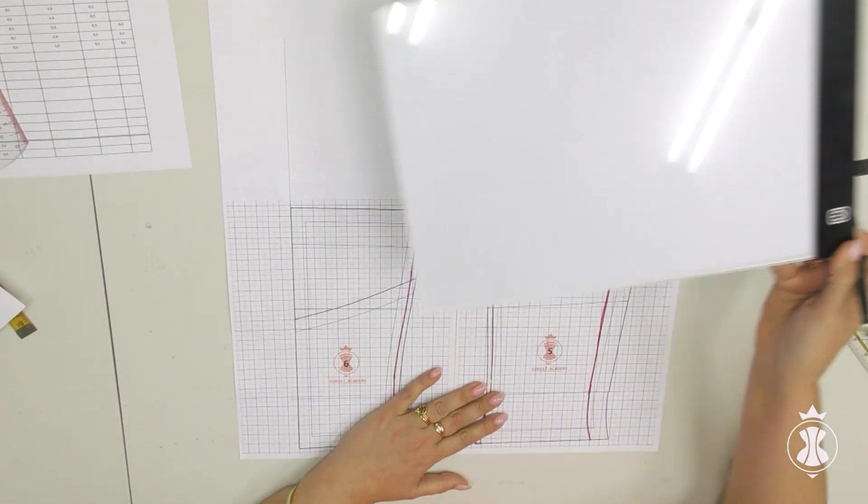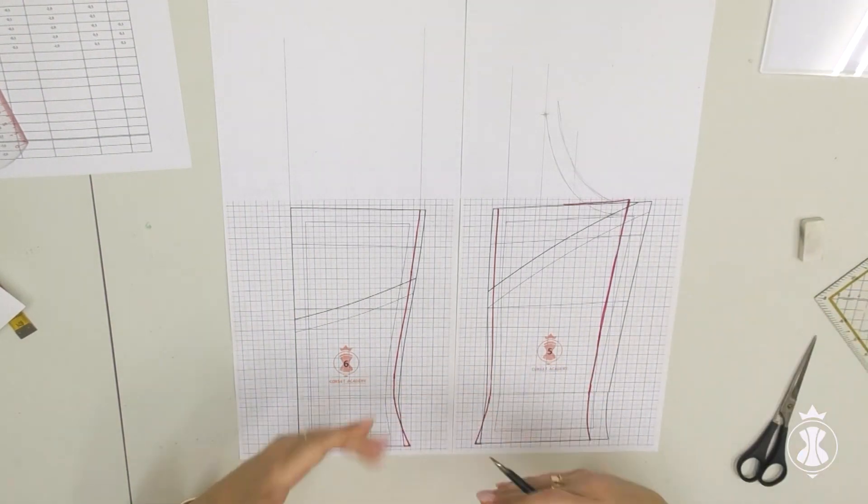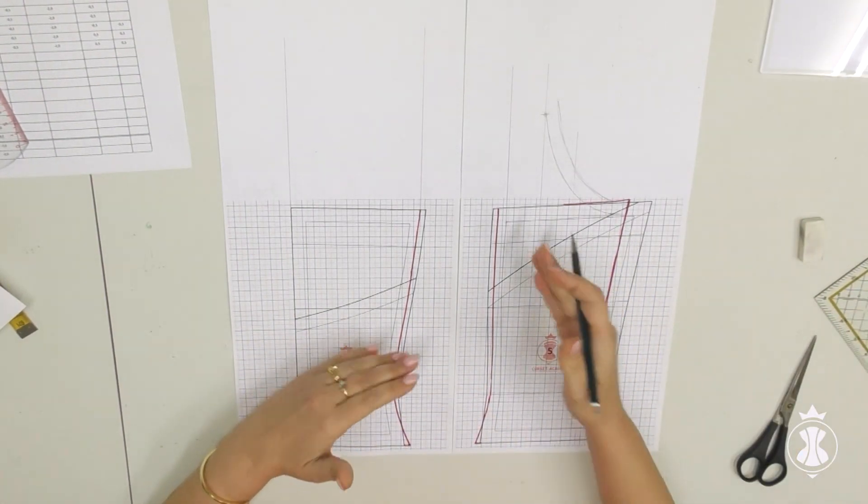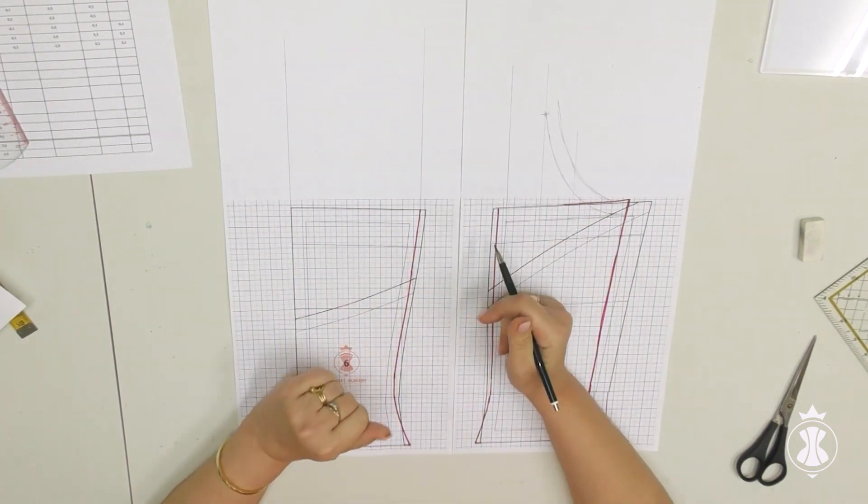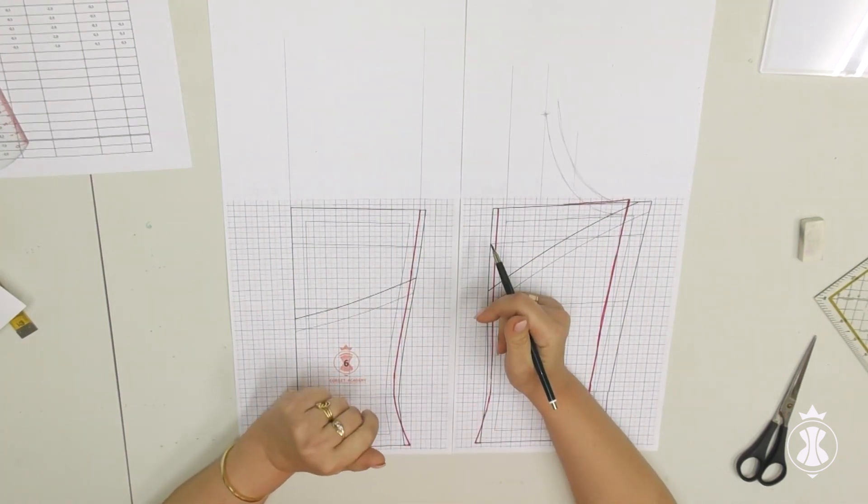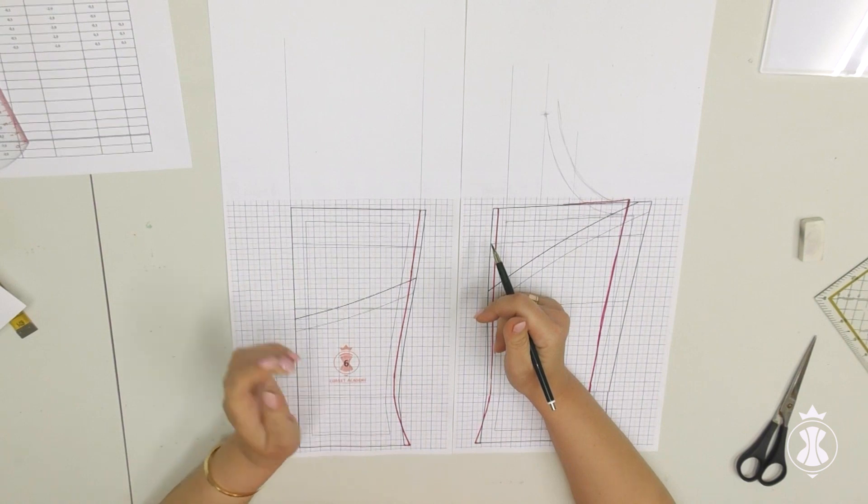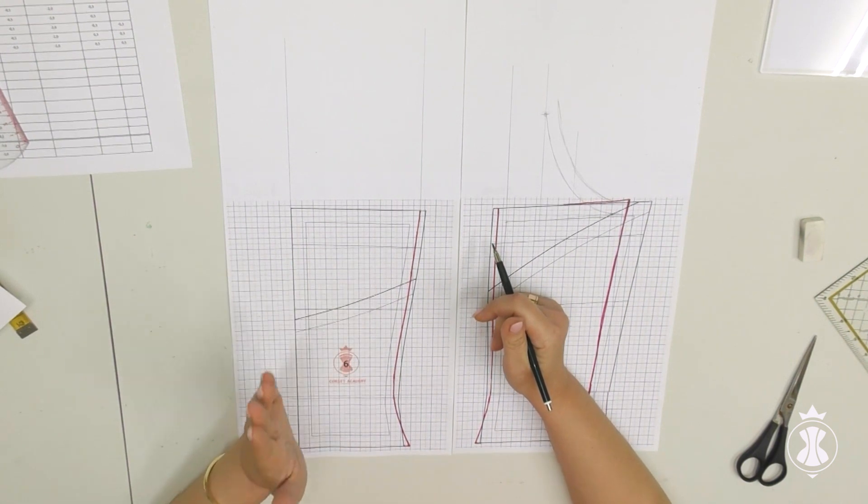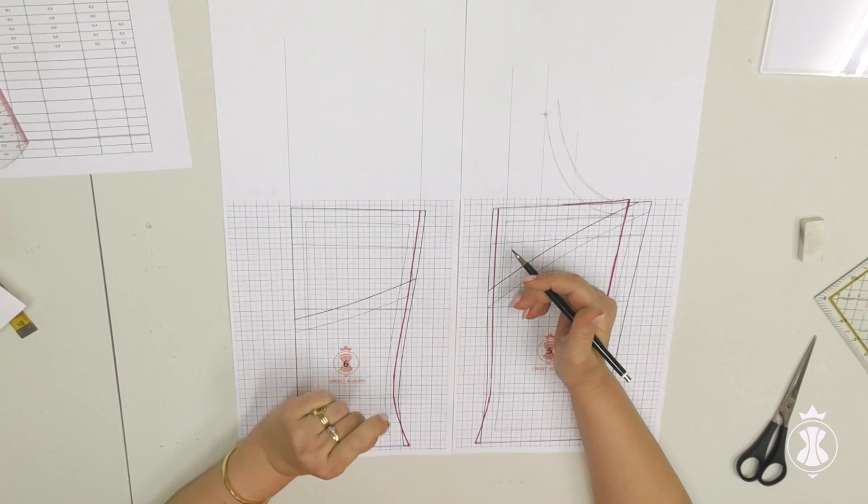Certainly we can use the light box and draw the transition line there. However, there is still a chance that you can make a mistake. All mistakes will be visible when the pieces are stitched together, and it will be problematic to make changes.